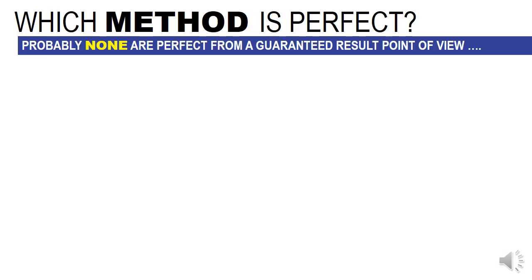Since we started with the definition of perfection, the question now is: which method is perfect? And the answer — this is my point of view — is probably none. None perfect from a guaranteed result point of view. From a methodology point of view, there is always a perfect methodology for a given type of problem, but there is seldom a perfect method.